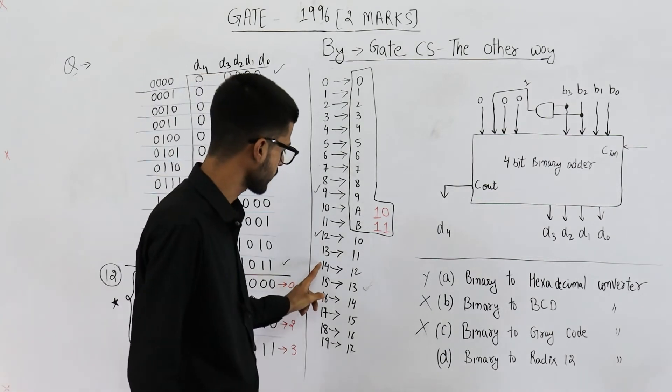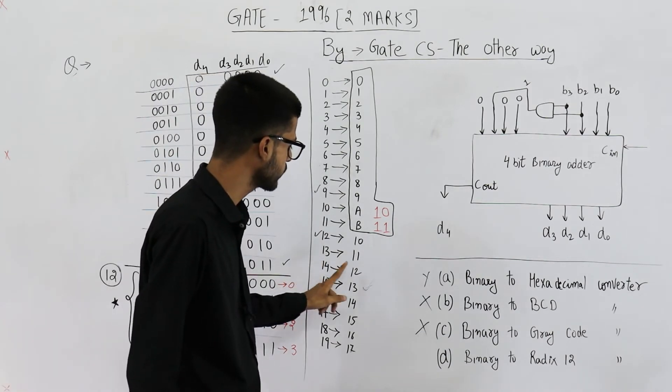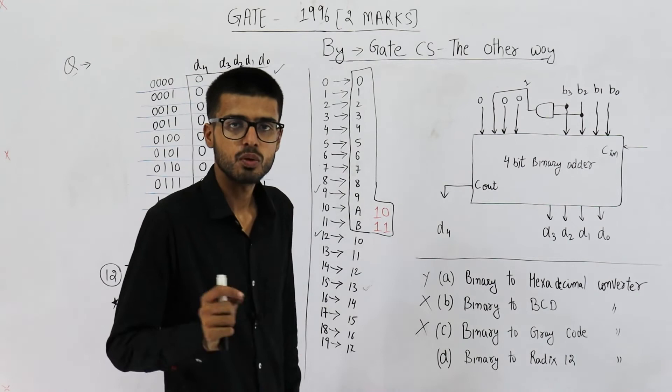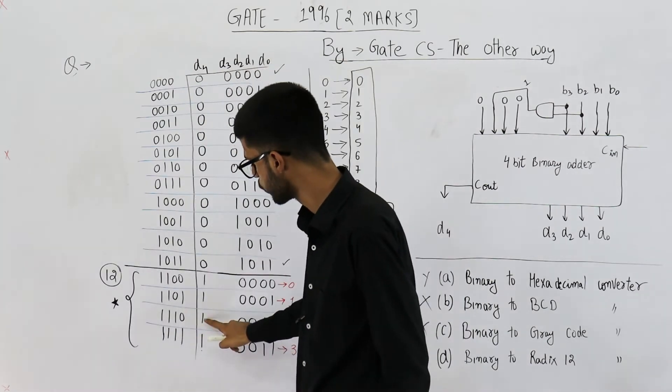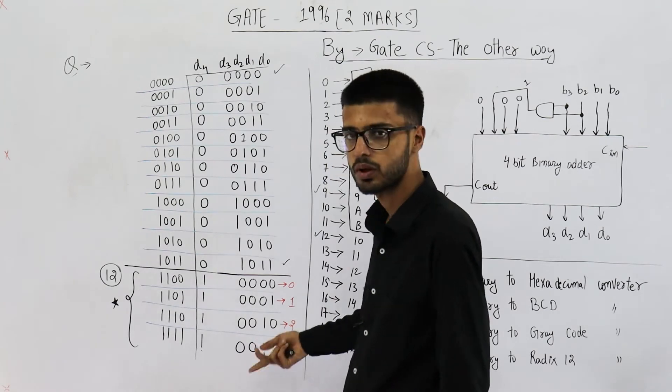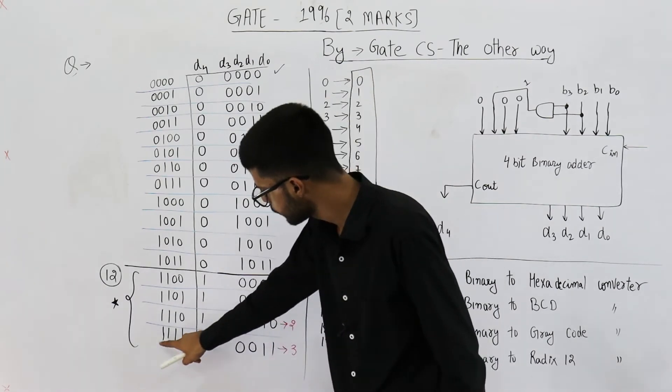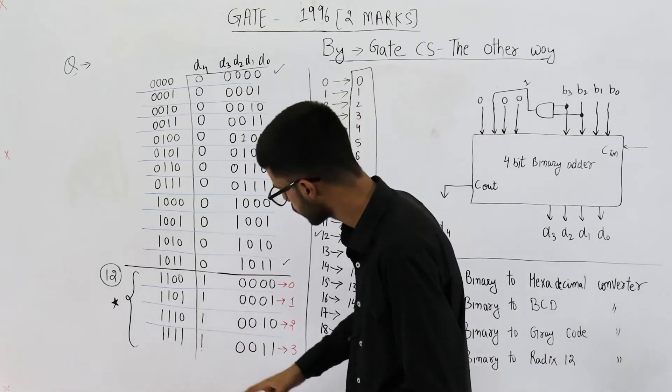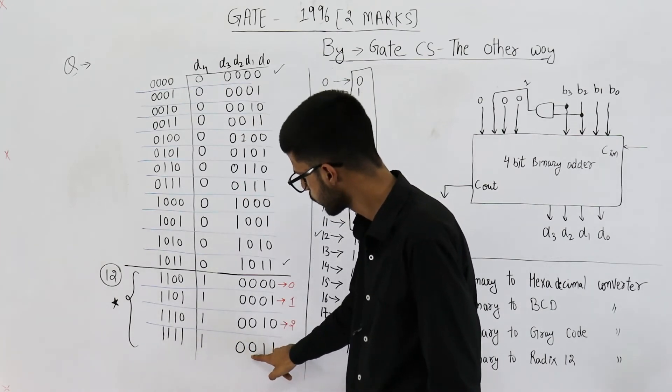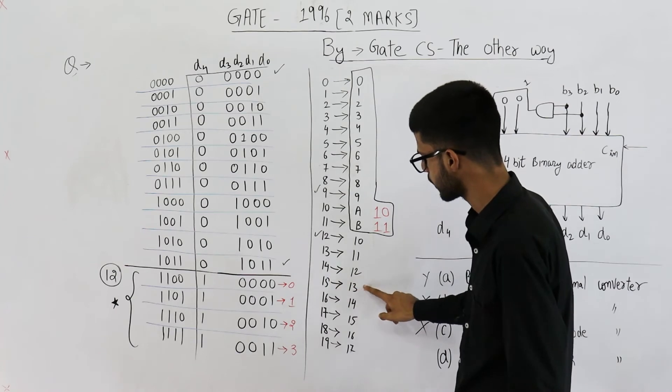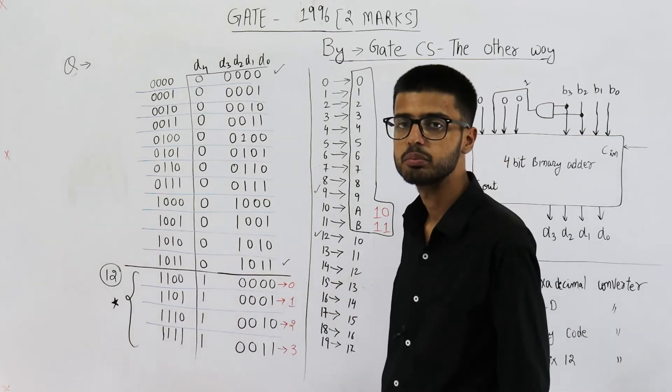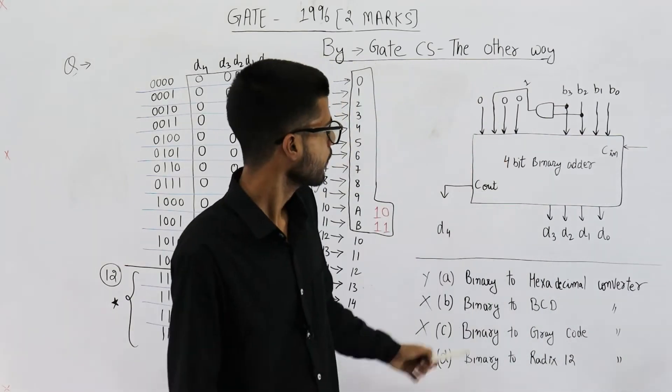Similarly, let's see for 14. 14, they are saying it has to be 12. 14 is 12 in base 12. 14 is here. See, 1, 2, 12 in base 12. Similarly, 15 in base 12 is going to be 1, 3. 0011 is 3. Here also, you can see 15 is 13. So, this is base 12 converter.